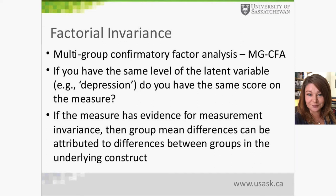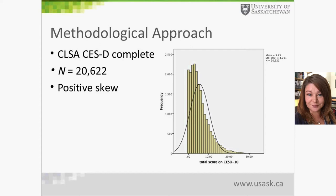If the measure has evidence for measurement invariance, then group mean differences can be attributed to differences in the underlying construct. This is why this research, while perhaps not exciting to everyone, is quite important. If the CES-D 10 is used as an outcome measure and you want to make assumptions about differences between groups — such as treatment versus control — you need to ask: is the scale biased toward one group? Measurement invariance addresses whether there are other systematic sources of error impacting the scale.